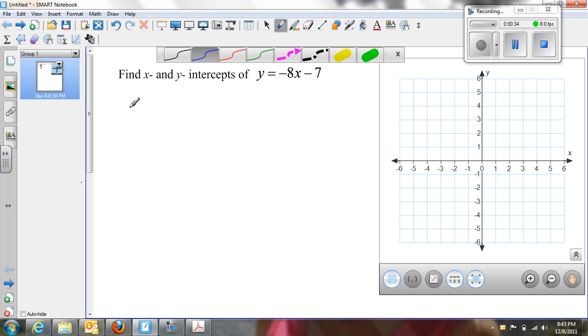First, I'm going to find the x-intercept. I'm going to set y equal to 0. So 0 = -8x - 7. Let's solve this equation. I'm going to add 7 to both sides.